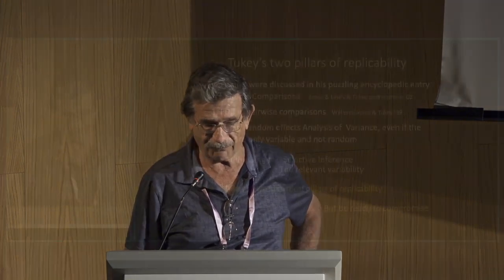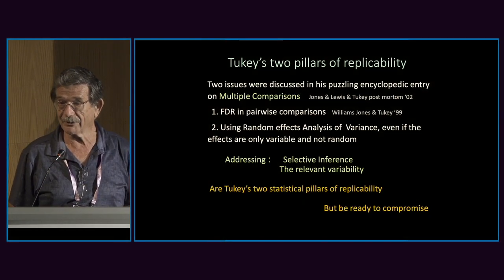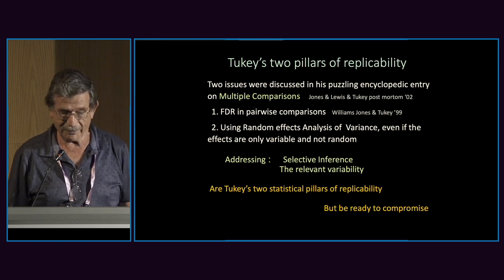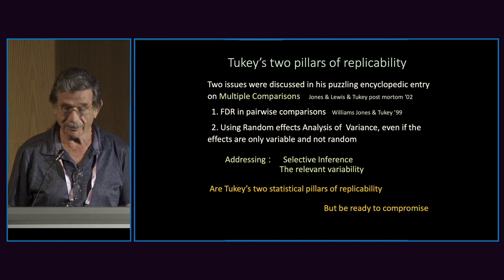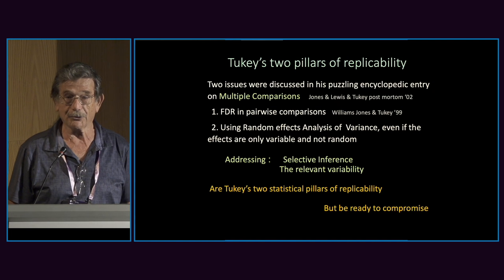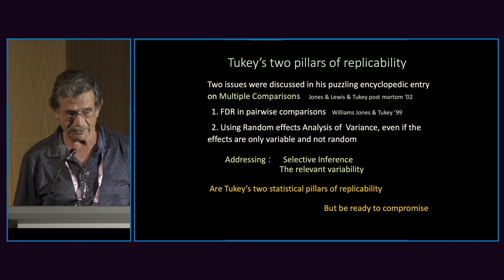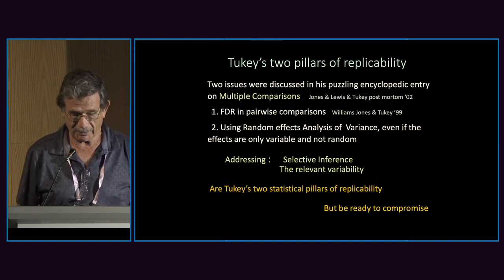Starting point is Tukey's last paper, a very puzzling entry in an Encyclopedia dealing with two issues: FDR and pairwise comparisons, based on the paper 'Tukey inference', and using random effects analysis of variance even if the effects are only variable and not random. It took me a while working in behavioral genetics to understand that this paper was essentially about replicability — these were the two issues Tukey considered important to achieve replicability of results: addressing selective inference and addressing the relevant variability.